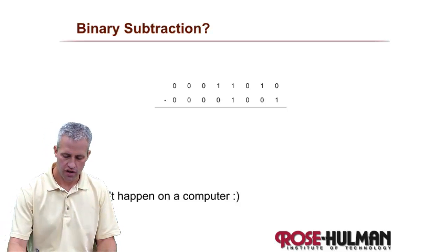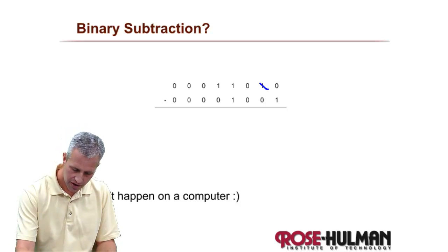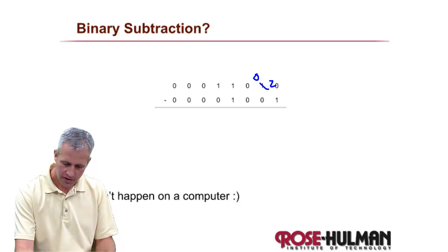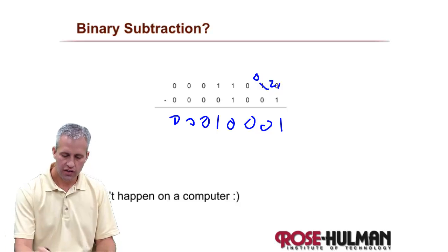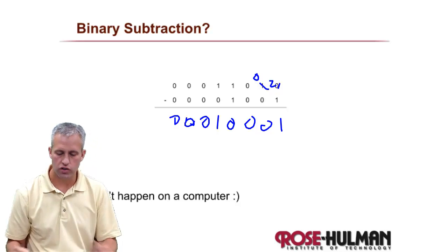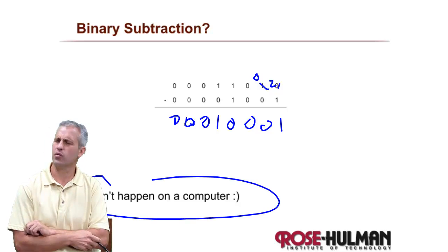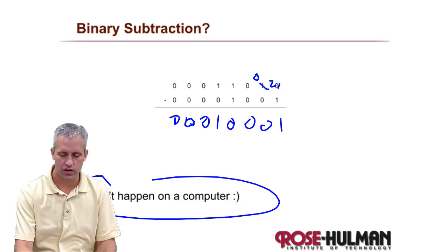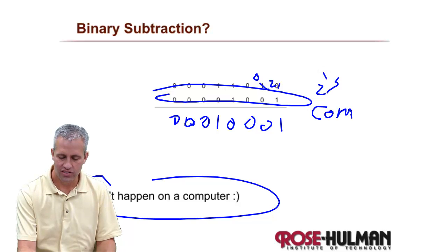Another question is subtraction. As a human you could do binary subtraction — you carry it over, so 2 minus 1 is 1. Turns out that even though you as a human could do subtraction in binary, a computer actually does not ever do subtraction. What it does is it converts the bottom number into a thing called two's complement, and then it adds them together.